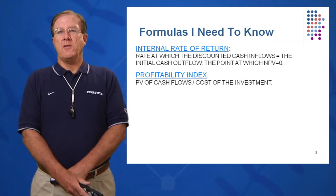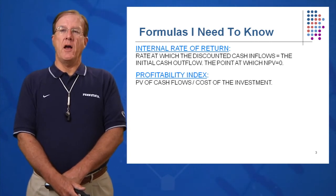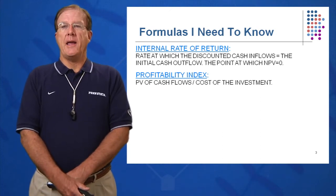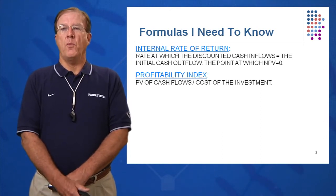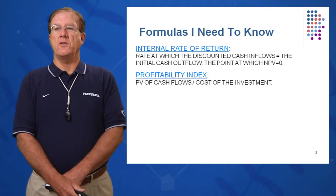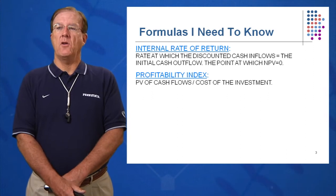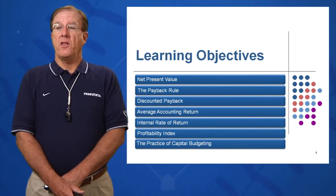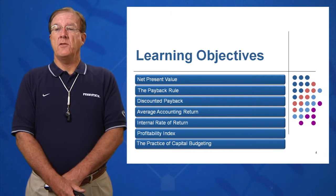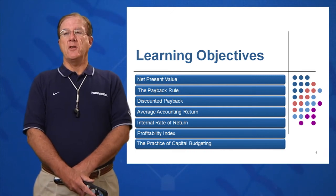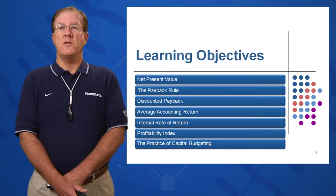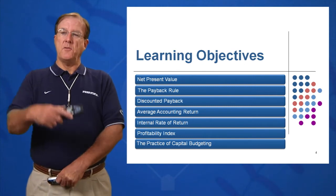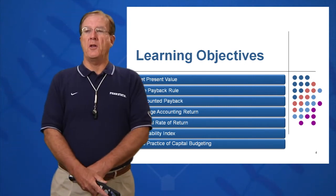Finally, profitability index, which is used heavily in nonprofits and governmental organizations. It's kind of the bang for the buck — the present value of cash flows divided by the original cost of the investment. We'll have seven learning objectives: the six methods just mentioned, plus how heavily these six methods are used in the practice of capital budgeting.